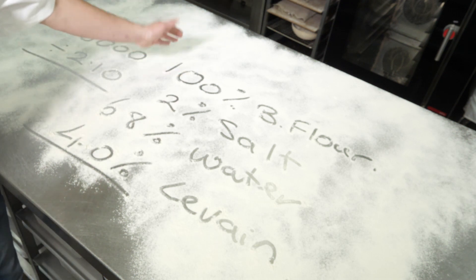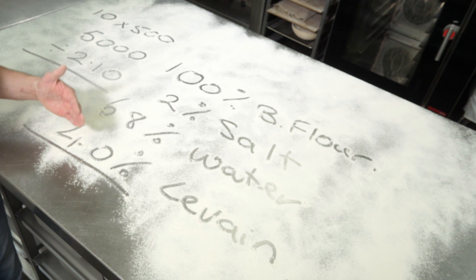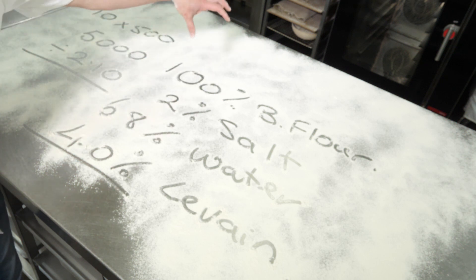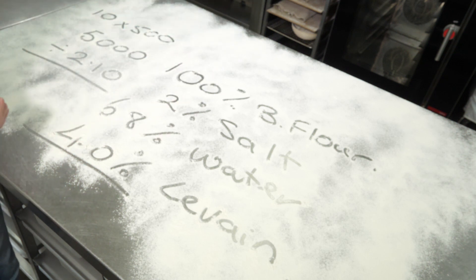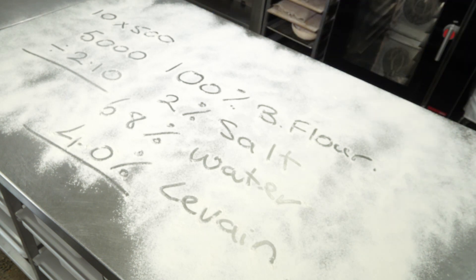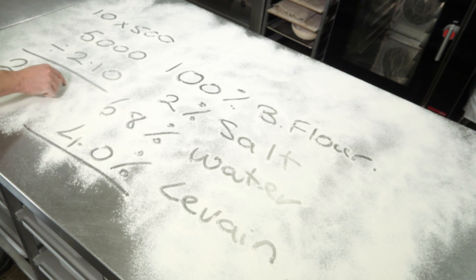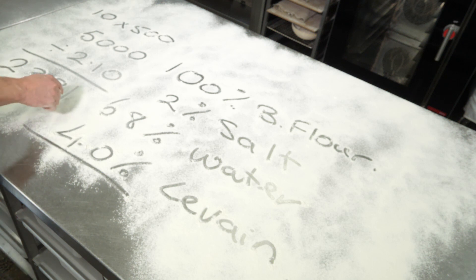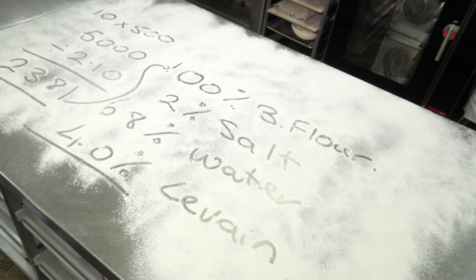It's not normal percentages — it is baker's percentages, where flour is always 100% and everything else is on top of whatever flour we start with, as a percentage of that weight. So let's work that out. 5,000 divided by 2.10 equals approximately 2,381 grams. So that's how much flour we need for that recipe.